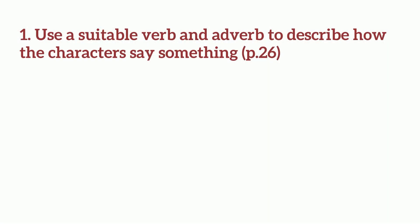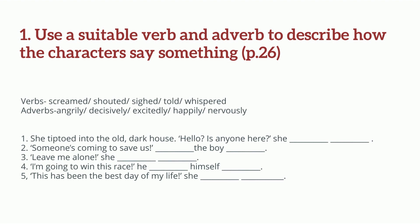Here's an activity from your textbook page 26. Use a suitable verb and adverb to describe how the characters say something. Let's try number one together. She tiptoed into the old dark house. 'Hello? Is anyone here?' She screamed angrily? No. Shouted decisively? No. The answer is she whispered nervously. Try the rest of the questions and you can check the answers in the description box below.